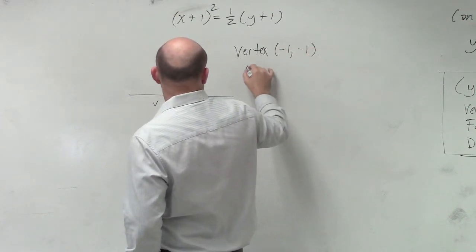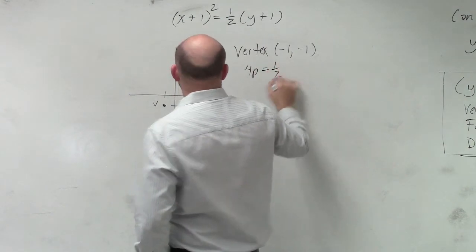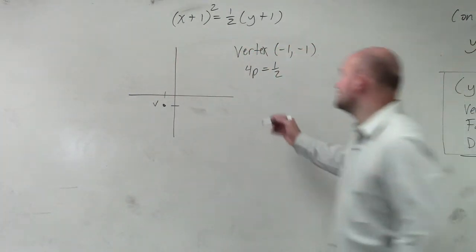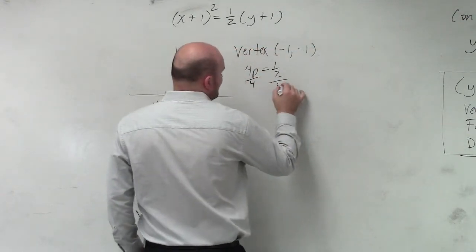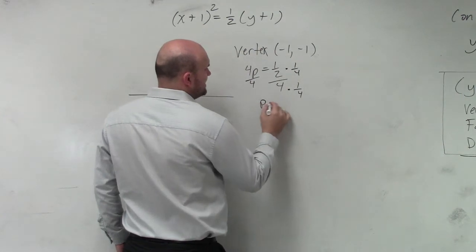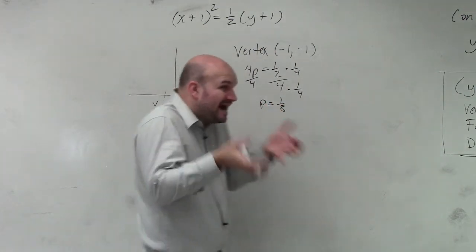To find my focus, I'm going to do 4p is equal to 1 half. I don't like these, right? But if you divide by 4, divide by 4 is the same thing as multiplying by the reciprocal. p is equal to 1 eighth. But it's positive 1 eighth.